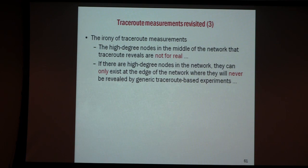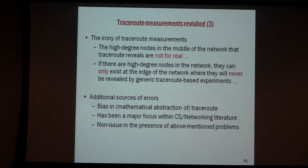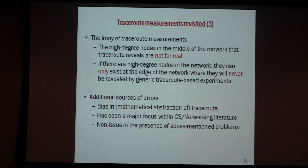Furthermore, if there really are high-degree nodes in the network, technology requires them to be at the edge of the network — only at the edge do we have technology where we can multiplex many small links. But no traceroute study will ever detect those high-degree nodes at the edge, because you will never have enough sources to traceroute into that part of the network. There is lots of literature on traceroute bias out there, but it tackles the wrong problem — it focuses on sampling bias when there are systematic errors that need to be solved first.